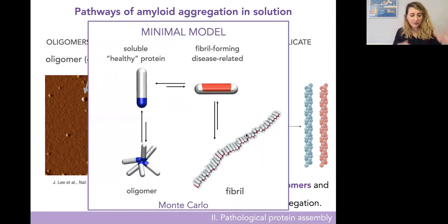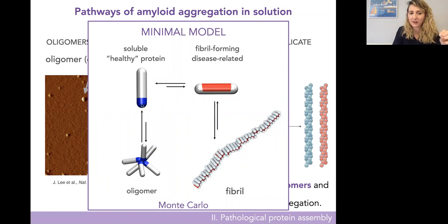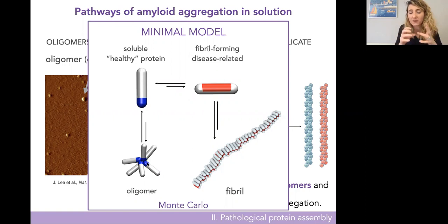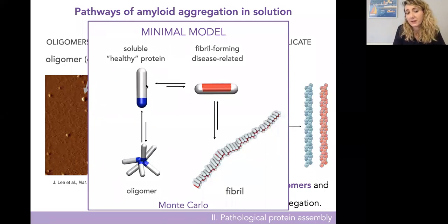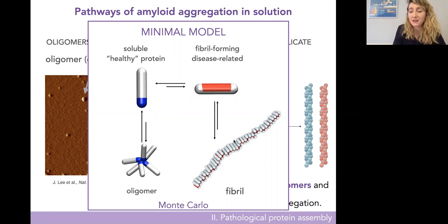Because of the generality of the process, we developed a minimal model. The minimal ingredients are that a protein can exist in a healthy soluble state, which can form oligomers — for us, a particle with an attractive tip that can assemble lightly into oligomers that are not stable so they can fall apart. This state can stochastically switch into a beta-sheet state — a particle with a side patch — where the red parts stick to each other side by side and on top of each other forming fibrils. This beta-sheet state is higher in free energy than the soluble one because it rarely occurs on its own, but it strongly sticks to itself, giving rise to irreversible fibrils. We run Monte Carlo simulations.